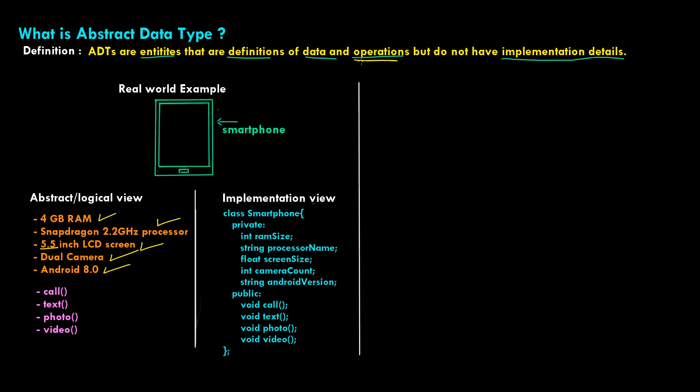The properties are the data of that particular entity, and the operations are things like: you can use your smartphone to call, send texts, click photos, click videos, and so on. These come under the behavior and the operations. So this is what an abstract or logical view of a smartphone looks like — you are just stating all the different properties and all the different operations and behaviors that the entity can do.